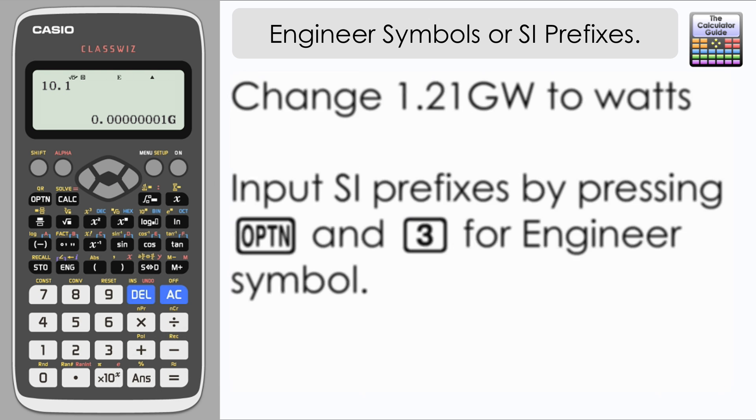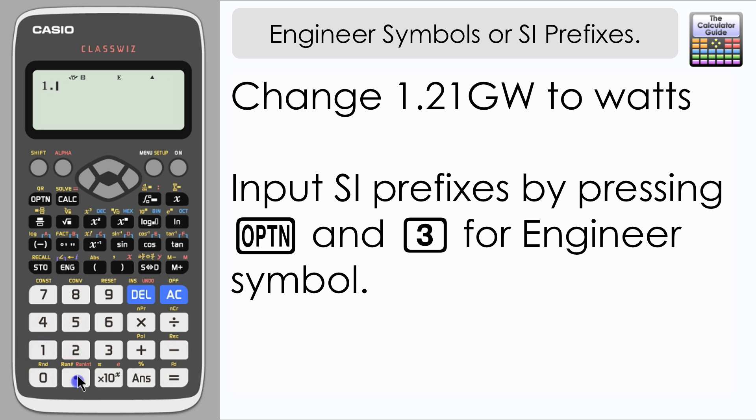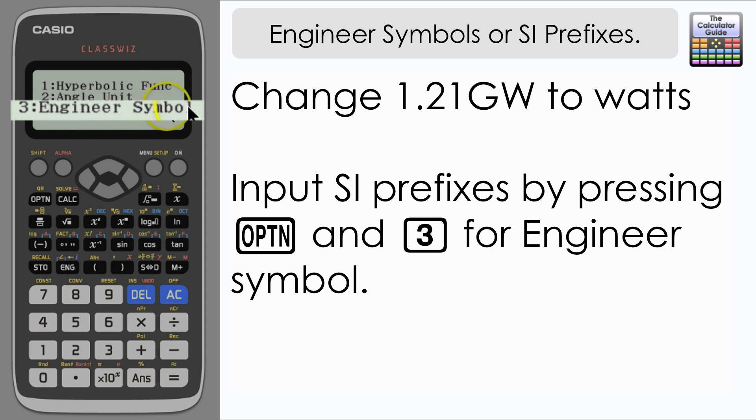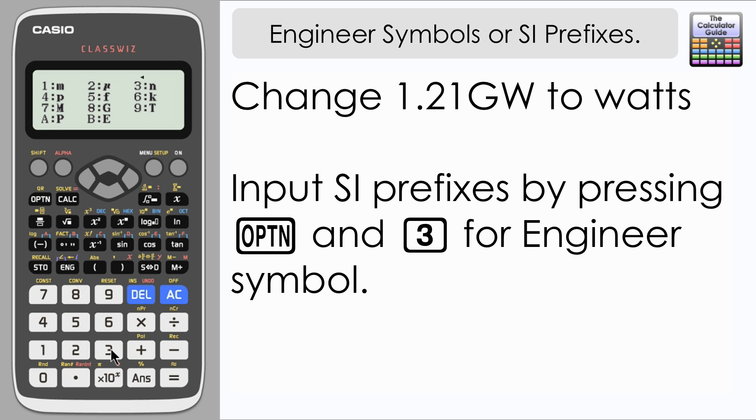So let's try this example, 1.21 gigawatts. So I'm going to input 1.21, and I'm going to press OPTN and select 3 for engineer symbol. Now if we pause here a moment, we've got our selections of engineer symbols or SI prefixes that we can input.